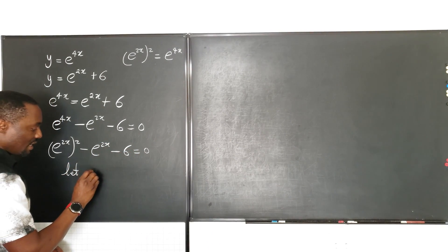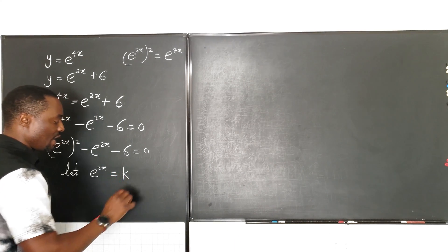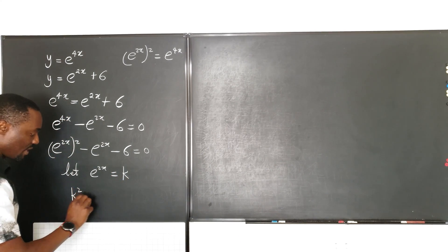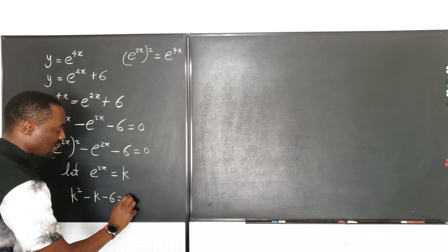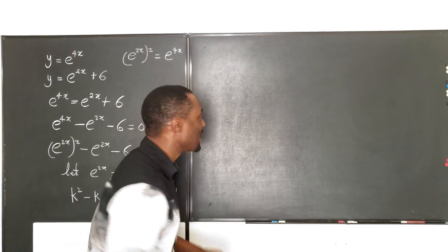And we say, let e to the 2x be equal to k. So we can rewrite this expression as k squared minus k minus 6 equals zero. And we can solve this quadratic equation. Now let's solve that.